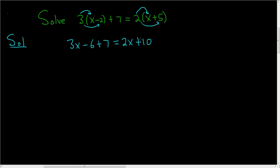It looks like we have some like terms on the left hand side so 3x let's go ahead and combine them negative 6 plus 7 is 1 and then here we have 2x plus 10.